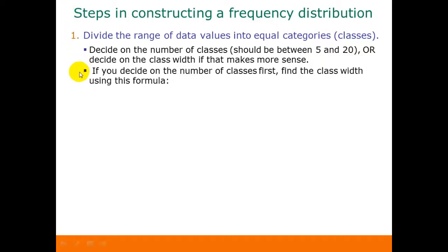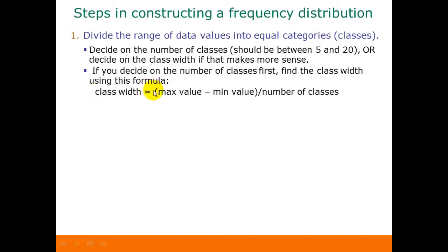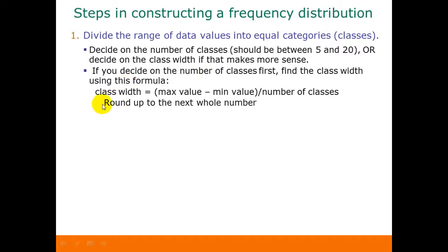If we decide on the number of classes first, then we use that to find the class width. The formula is: take the maximum data value minus the minimum data value, and then divide that by the number of classes we want to have. Once we get that number, we round up to the next whole number — we always have to round up so that we'll get all of our data covered.